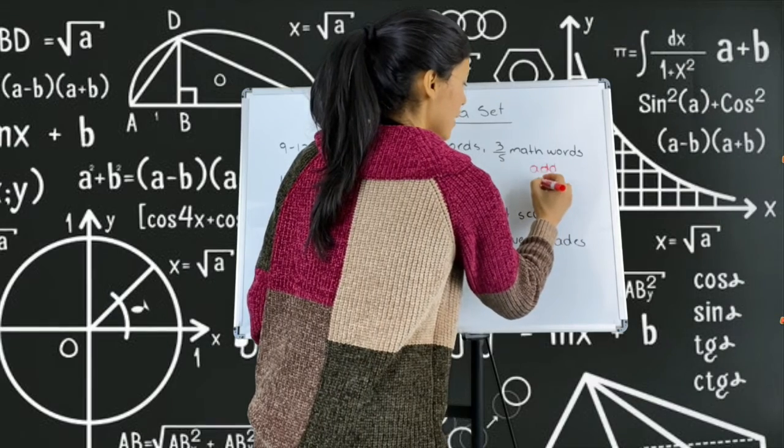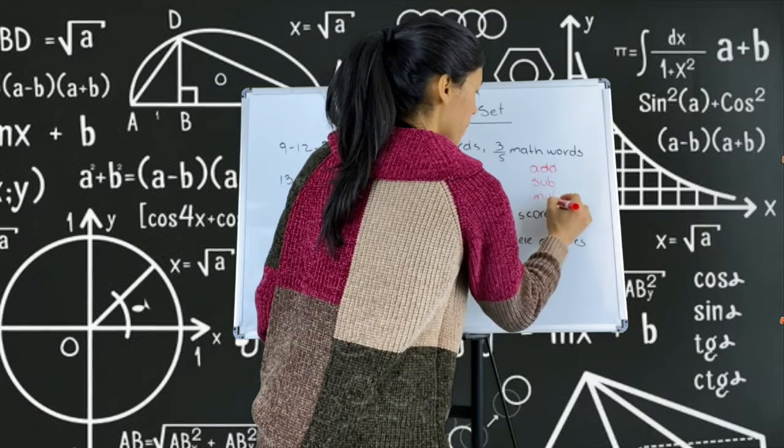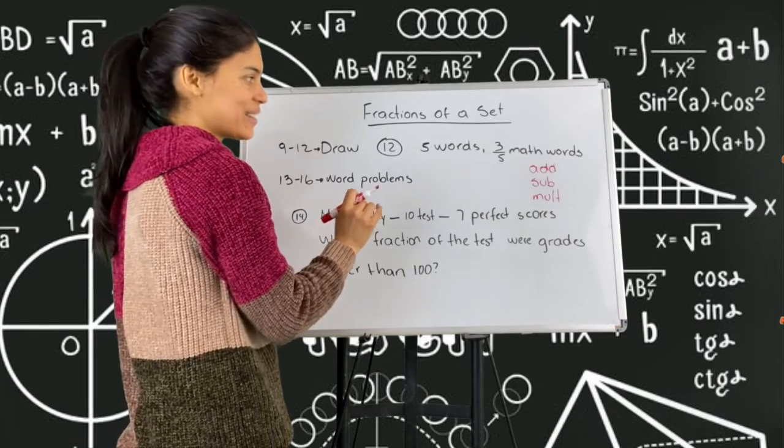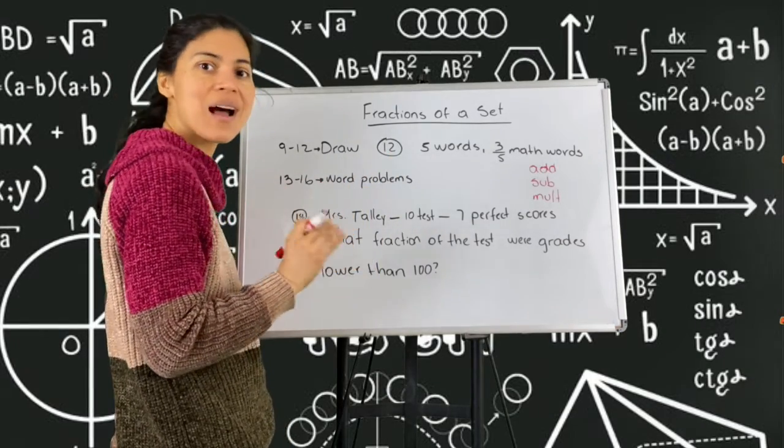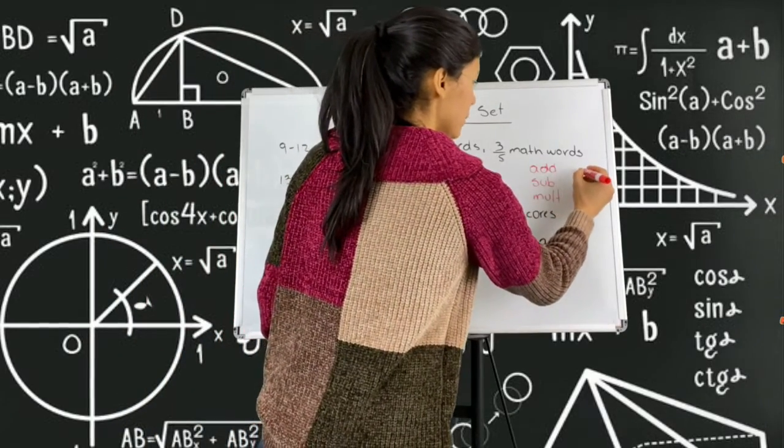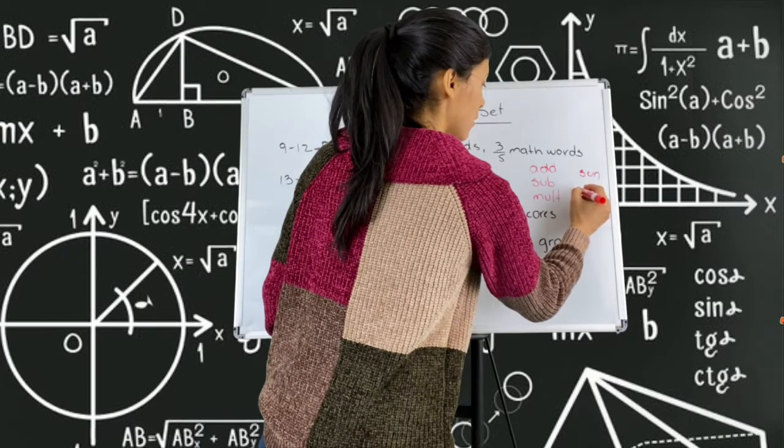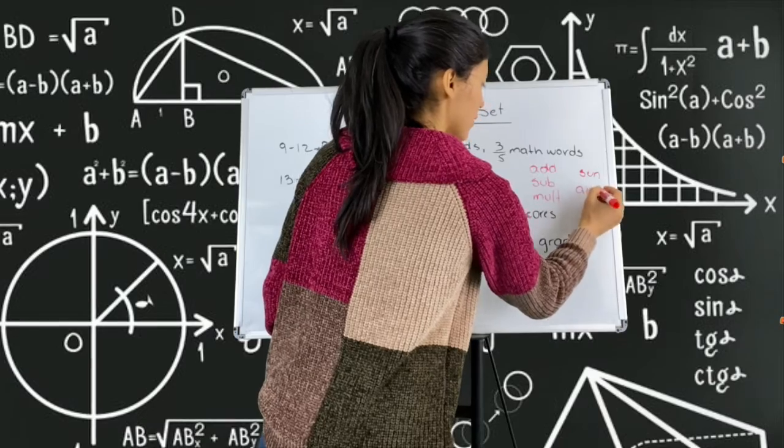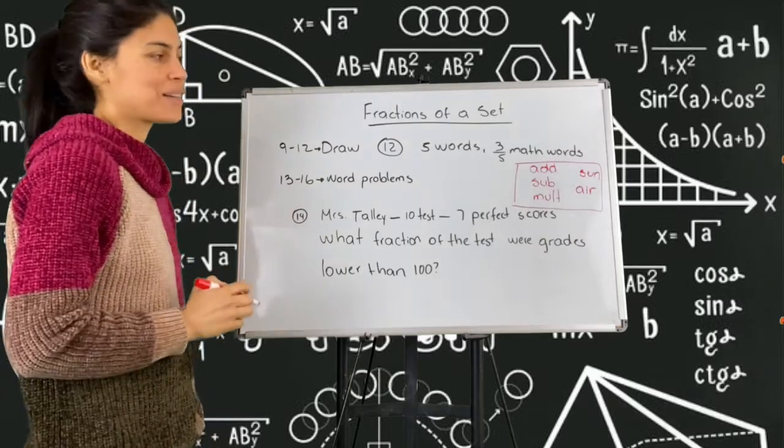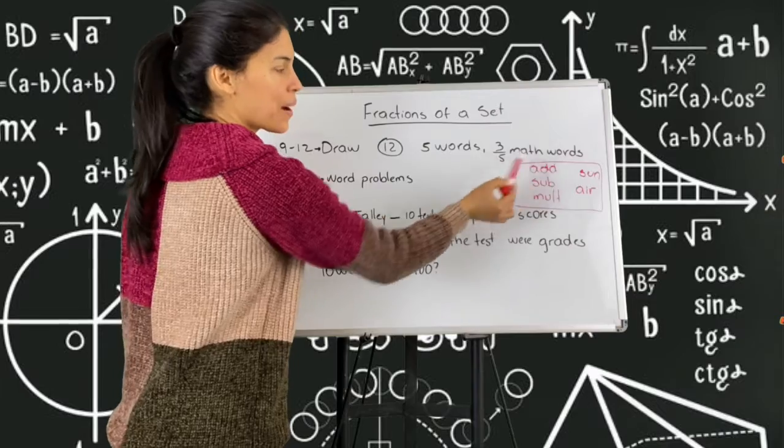How about we draw and write addition, subtraction, multiplication? We have three, but the whole set has five words, so I need to write two that are not math words. So I have three here. Let me write here sun and air. Okay, here I have my set, my set of five words, and three-fifths of those words are math words.